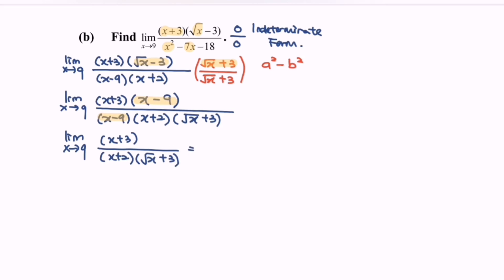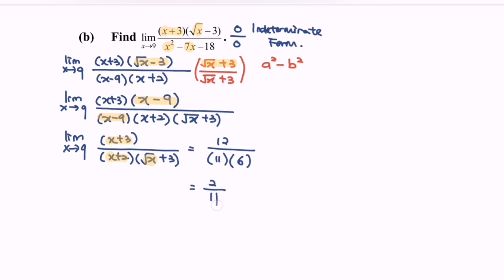Kindly substitute the value of 9 into the situation. Rewriting after simplification: (x plus 3) over (x plus 2) multiplied with (square root of x plus 3). We will have 9 plus 3, which is 12, over 9 plus 2, which is 11, multiplied with square root of 9 plus 3, which gives 6. So finally, limits when x approaching 9 for the function equals 2 over 11.